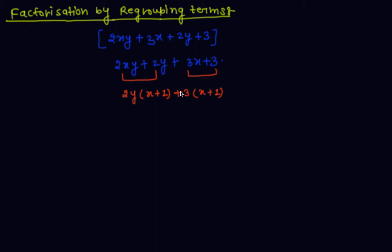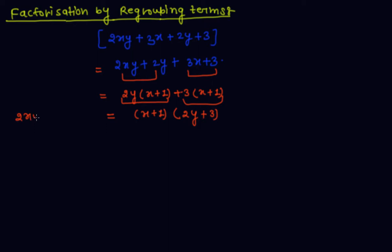Now we have a common factor (x plus 1) in both terms. So we take (x plus 1) as common. In the bracket, in the first term only 2y is remaining, and in the second term only 3 is remaining. So the factored form of 2xy plus 3x plus 2y plus 3 is (x plus 1)(2y plus 3).